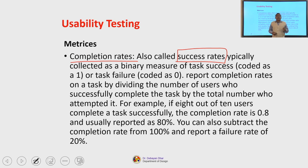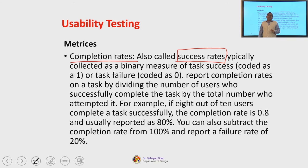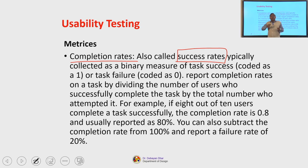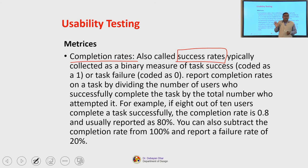For example, if your stakeholder says the current software has a failure rate of around 40 percent and wants you to reduce it to 10 percent, that is a benchmark. Identify the usability issues, identify why users are unable to complete successfully - the success rate is around 60 percent - and with your new design, you are supposed to improve it to at least 90 percent. That is what we understand by completion rates or success rates.